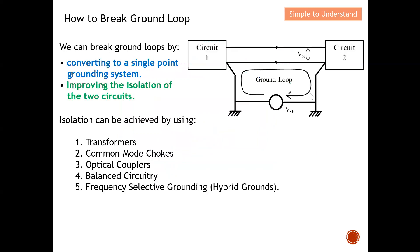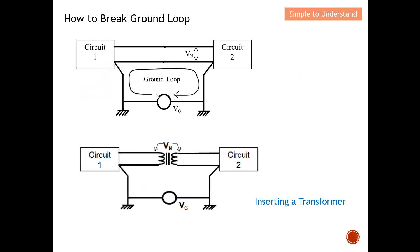To break the ground loop, we need to convert to a single-point grounding system, or we can improve the isolation between the two circuits — effectively cutting the connection between transmitter and receiver. Isolation can be achieved by using five methods: transformer, common mode choke, optical coupler, balanced circuitry, and frequency selective ground ring. For example, in the diagram shown, we insert a transformer between the transmitter and receiver, and this breaks the ground loop — that is method number one.